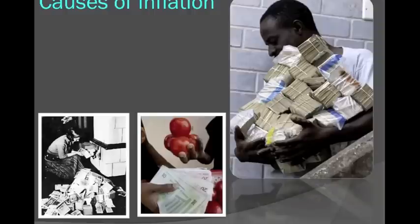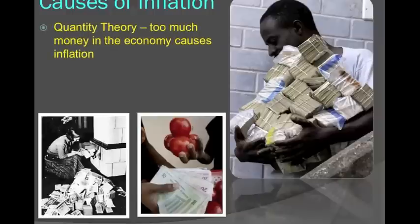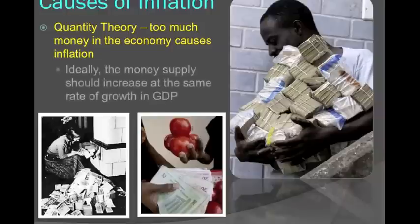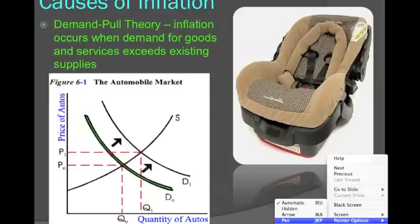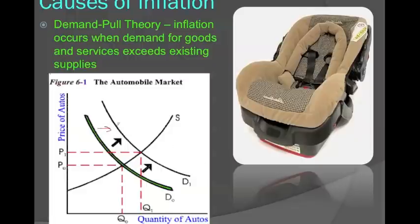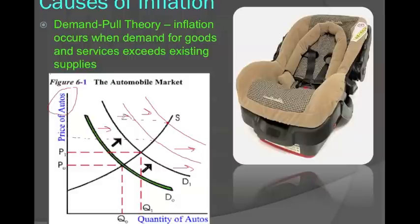Why does inflation happen? There are effectively three theories. The first is called the quantity theory — too much money, prices go up. In other words, too much currency out in the economy means too much money chasing too few goods, causing inflation. Ideally, the money supply should grow at the same rate as GDP. Theory number two is demand pull. If we see a shift to the right in the demand curve, it pulls prices up. In our economy, if demand increases for all products, you're going to see general price levels increase. The demand pull theory relies on supply and demand, where demand shifts right and causes an increase in price levels.